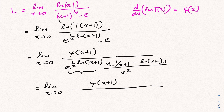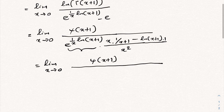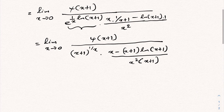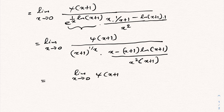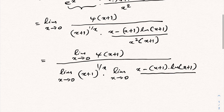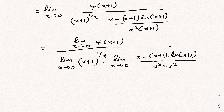We recognize that e to the (1 over x) times natural log of (x plus 1) equals (x plus 1) raised to the 1 over x. Taking a common denominator in the bracket, we get x minus (x plus 1) times natural log of (x plus 1), all over x squared times (x plus 1). We split the overall limit into three separate limits: L1, L2, and L3 corresponding to digamma of (x+1), (x+1)^(1/x), and the remaining fraction.